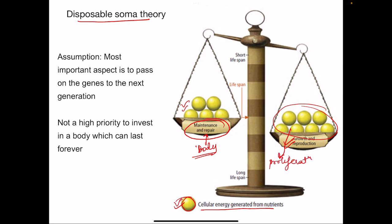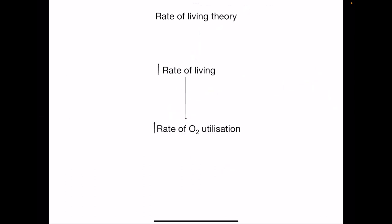However, it is less in maintenance of our own body and because of this, the life span is smaller. This balance shows long life span versus short life span. More and more we invest in growth and reproduction, this part goes up and life span will be shorter. One example: animals which reproduce very fast have a shorter life span. That is what is said by disposable soma theory.